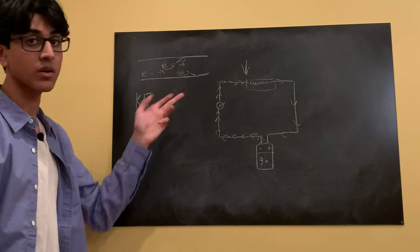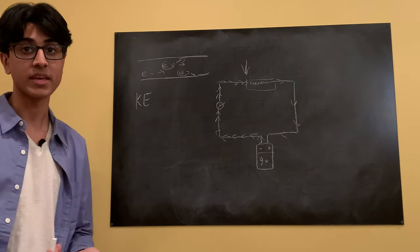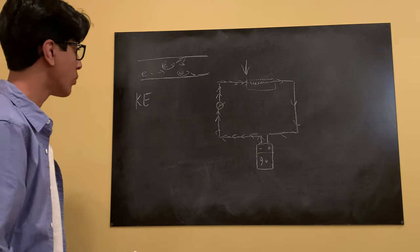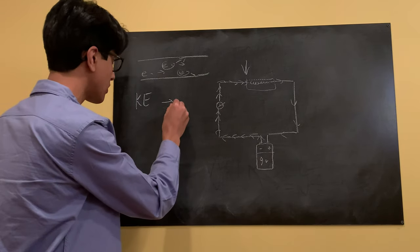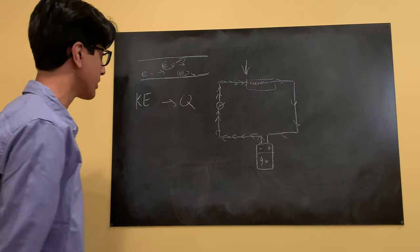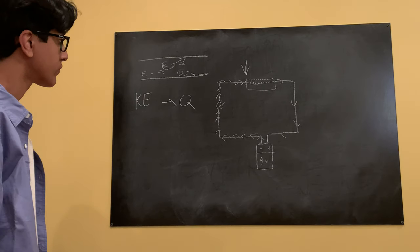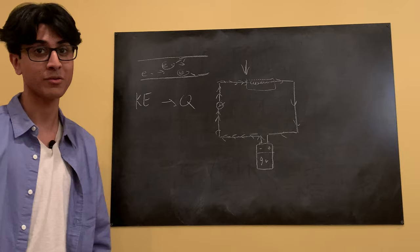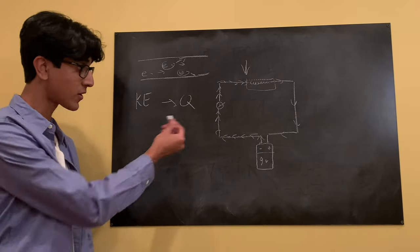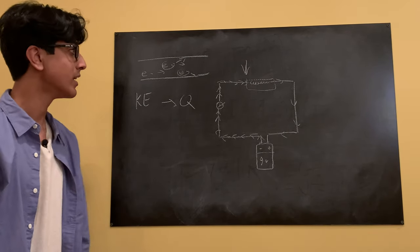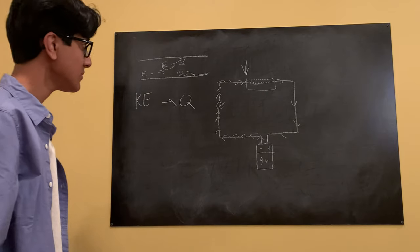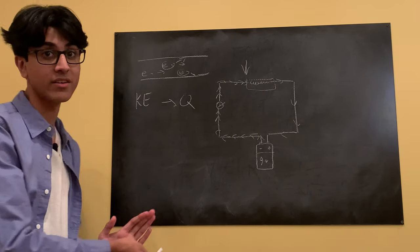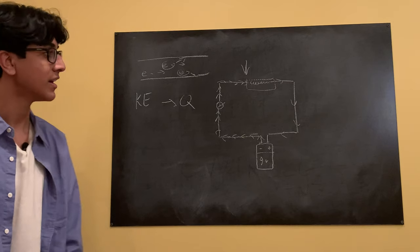So this KE will go to Q which is thermal energy. I don't know why it's called Q, don't ask me, I'm not the one who invents these variables, but Q represents our thermal energy. So yeah, we're gonna get right into the building now of this ignition controller.